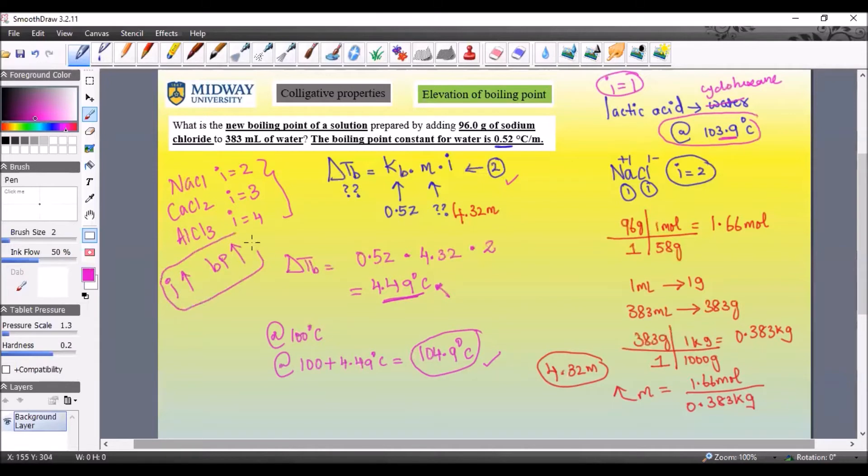If you take three beakers of water, equal amounts of water, say 100 mils, and you add equal quantities of sodium chloride, calcium chloride, and aluminum chloride to them, you're going to see that the one with aluminum chloride would boil at the highest temperature, whereas the one with sodium chloride boils at the lowest temperature because of this dissociation.